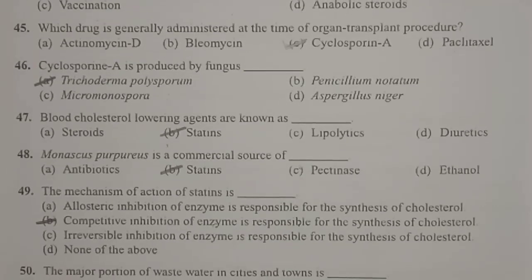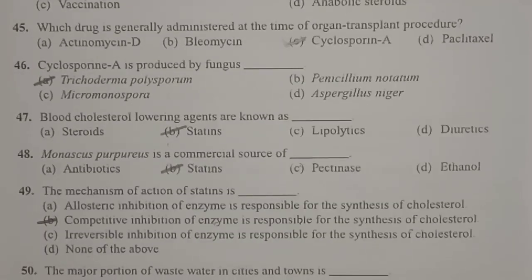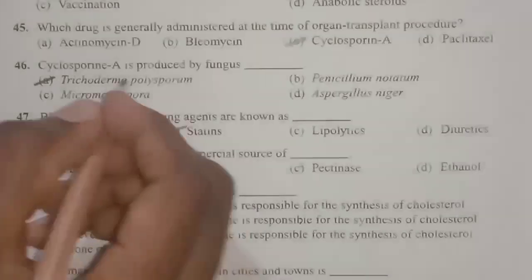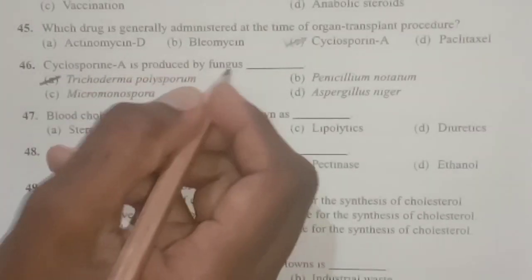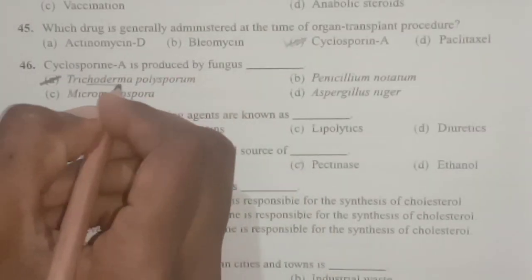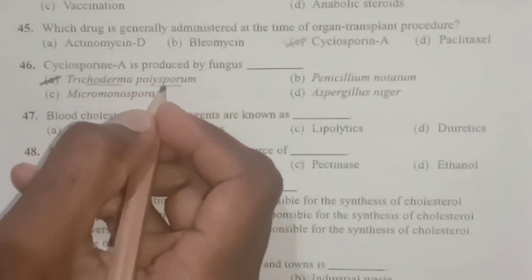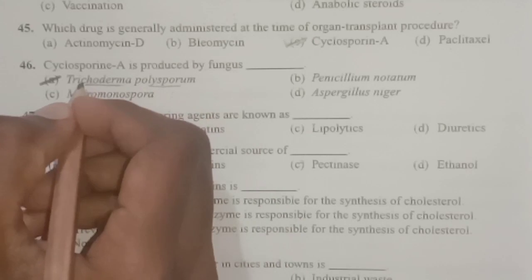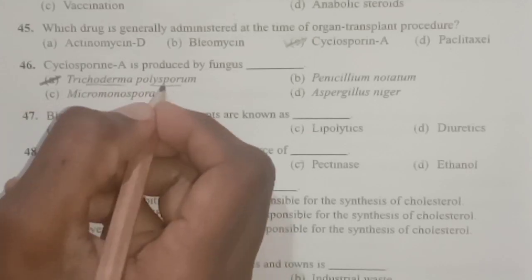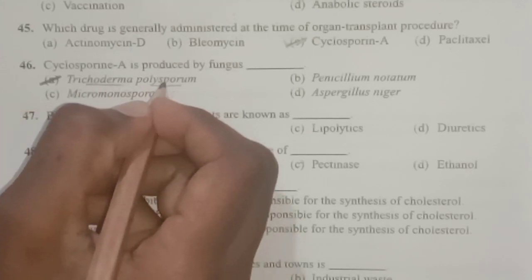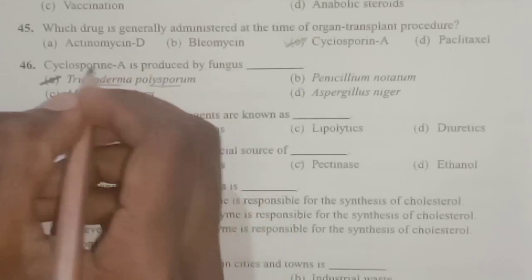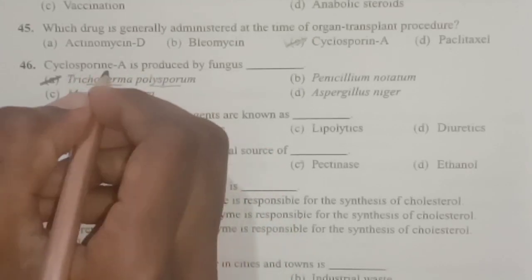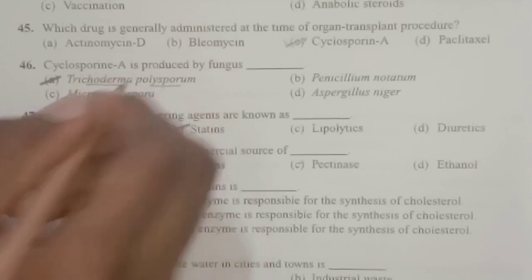Next: cyclosporine A is produced by a fungus known as Trichoderma polysporum. Trichoderma polysporum produces the immunosuppressive agent known as cyclosporine A.